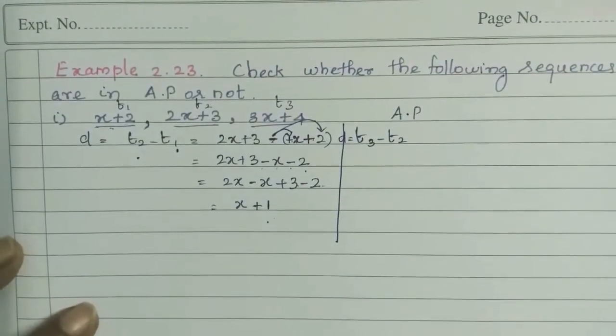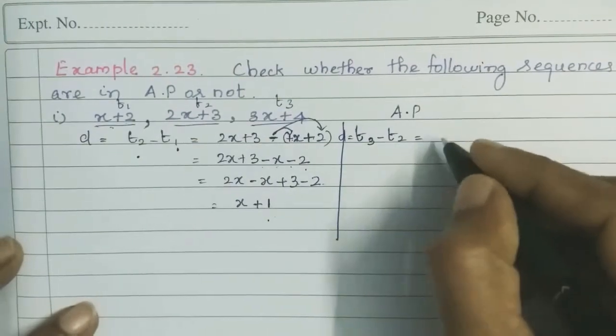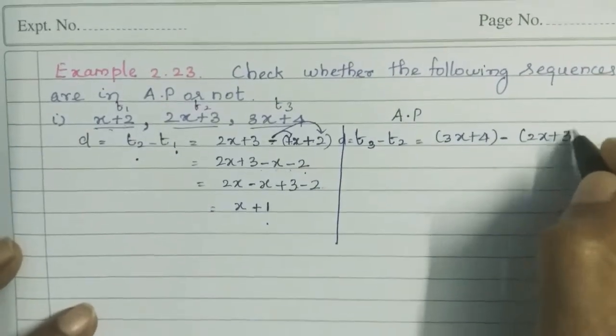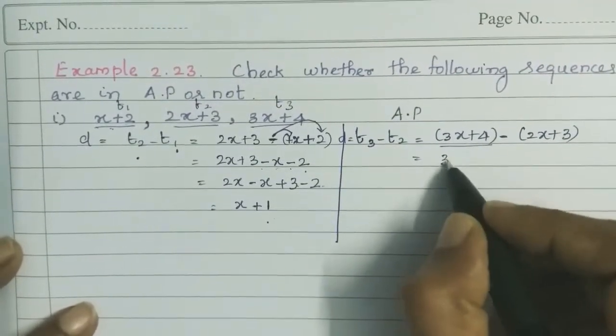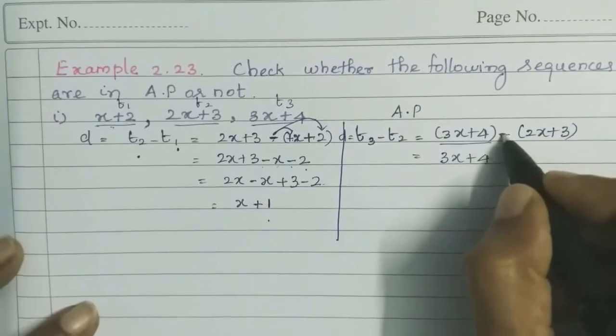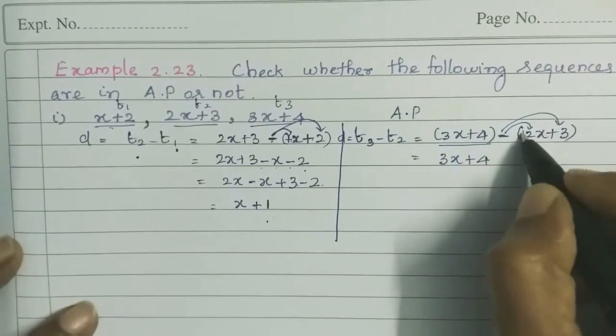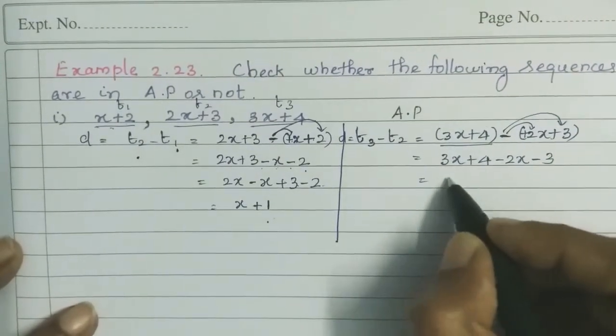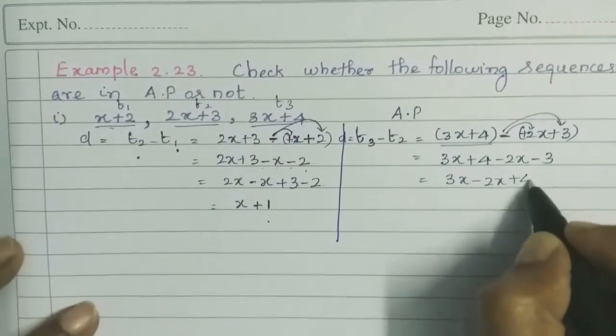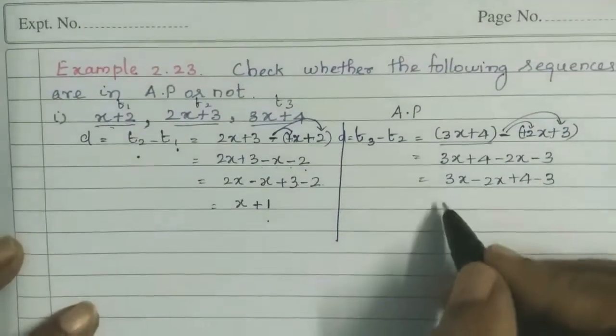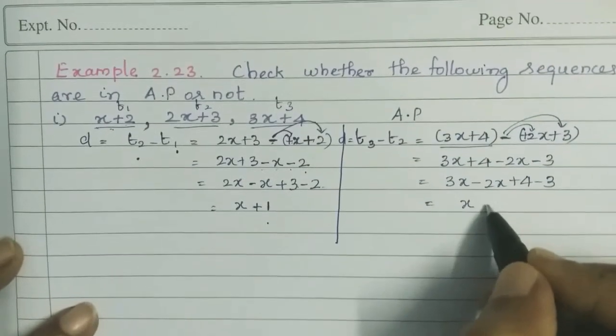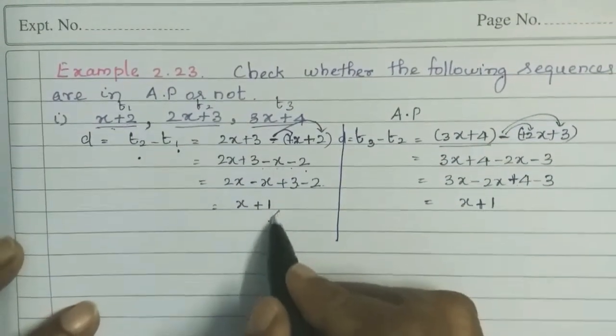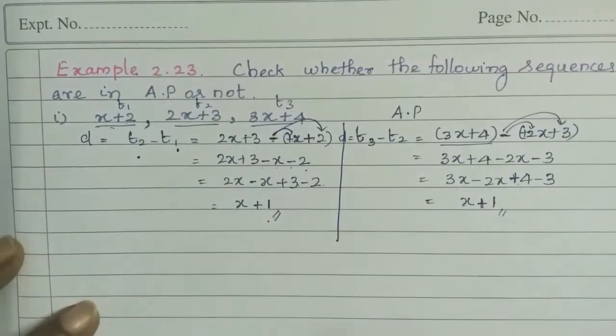Let's find D as T3 minus T2 and check if the differences are equal. So T3 is 3x plus 4 minus T2 which is 2x plus 3. Opening the brackets, 3x plus 4 minus 2x minus 3. Then 3x minus 2x is x, and 4 minus 3 is 1.